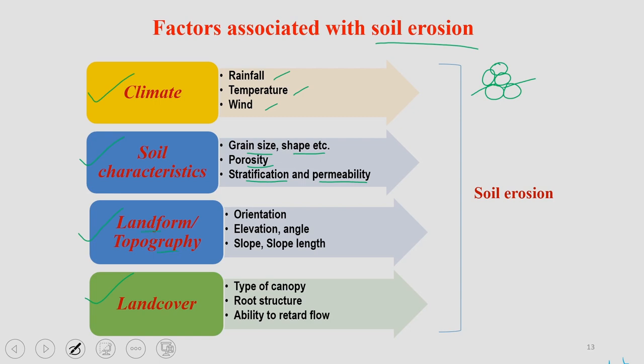Landform and topography, as you all understand, includes orientation of the land, elevation and angle, slope and slope length. These are the factors under landform and topography that we need to look at. Finally, land cover includes the type of canopy, root structure of various plant species, and ability to retard the flow of water.